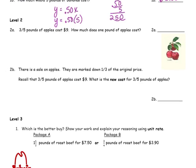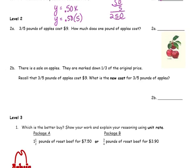Three fifths of a pound of apples cost $9. How much would one pound cost? So we want a unit rate for one pound. Cost is our y value, and our unit rate is y divided by x. So we have $9 divided by three fifths.